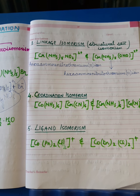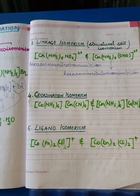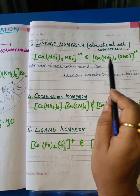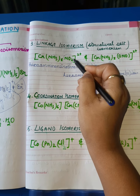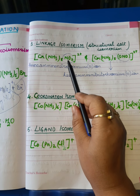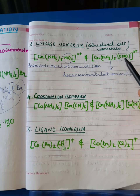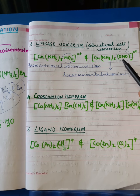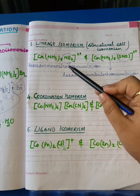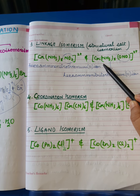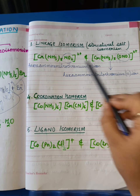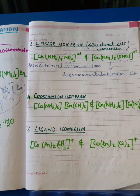Ambidentate ligands are those ligands which can attach themselves to the central metal atom or ion via one atom, and in another case via a different atom. In these two complexes, which have the same molecular formula, they have an ambidentate ligand: nitro (N) in one and nitrito-O in the other. In this complex, NO₂ attaches itself to the chromium ion via the nitrogen atom. When two or more complexes share the same molecular formula and the same ligands but differ in their mode of attachment due to an ambidentate ligand, the isomerism is called linkage isomerism.